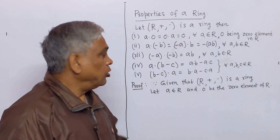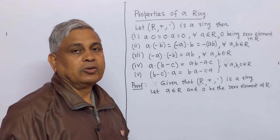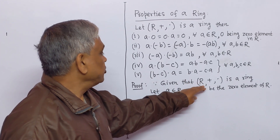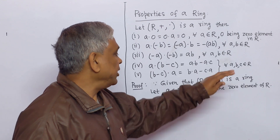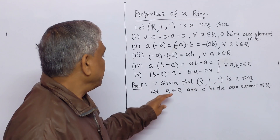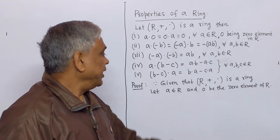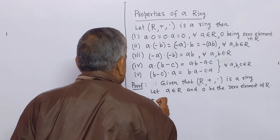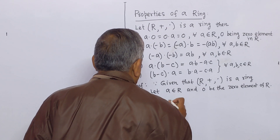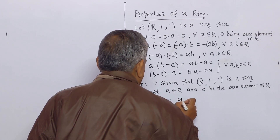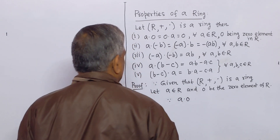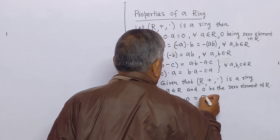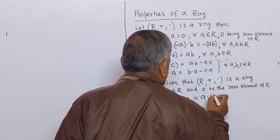We prove all properties one by one. Let R be a nonempty set with binary operations addition and multiplication, forming a ring. Let a belong to R and 0 be the zero element of R. Property 1: a·0 equals a·(0 + 0).